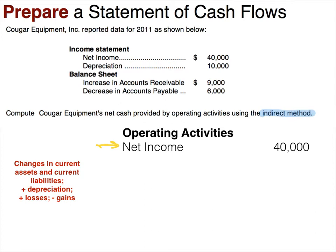There are no gains and losses provided, so we assume there are none. Then we look at depreciation. We do have depreciation in the income statement information. Remember, depreciation is a non-cash expense but it decreased net income, so since it decreased net income but didn't affect cash, we have to add it back. So we'll add back that $10,000 in depreciation expense.